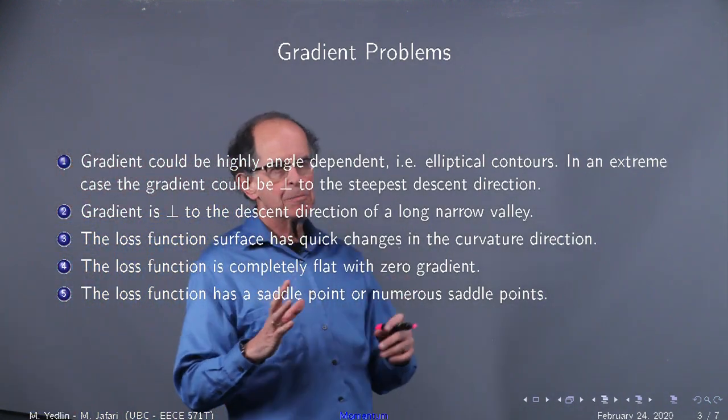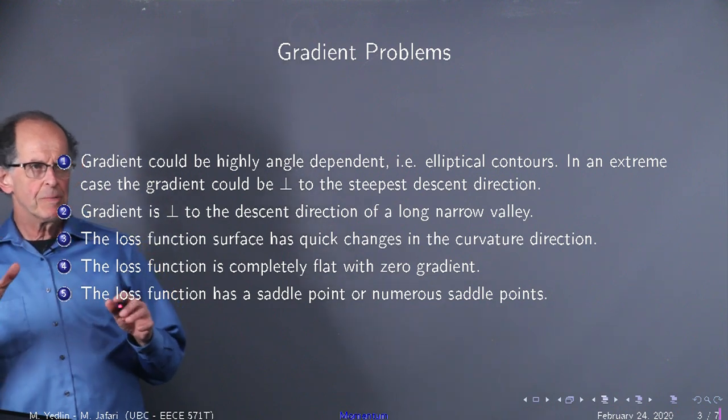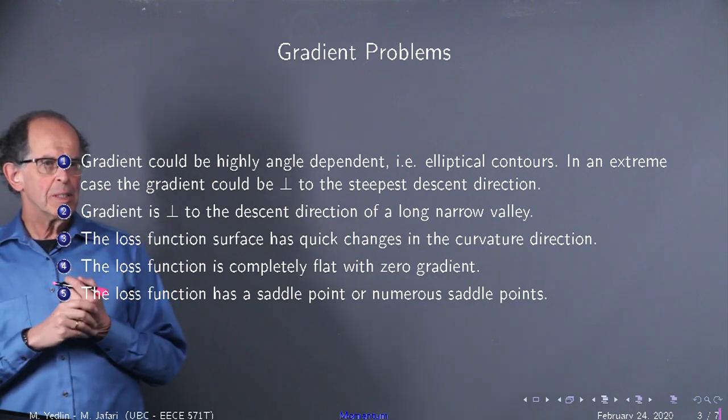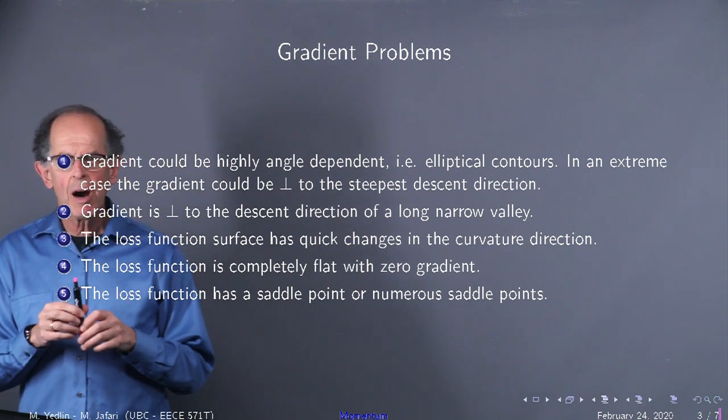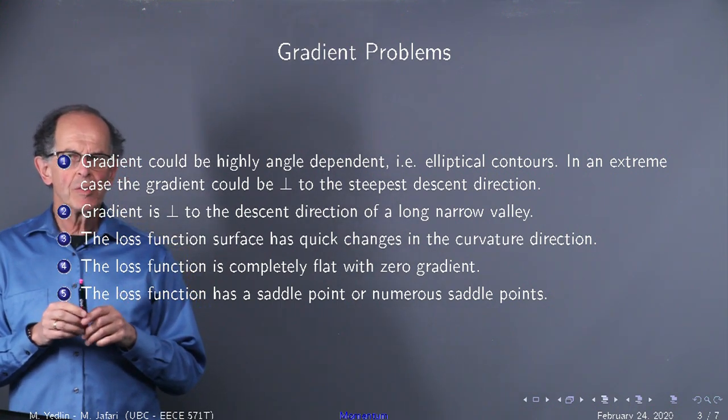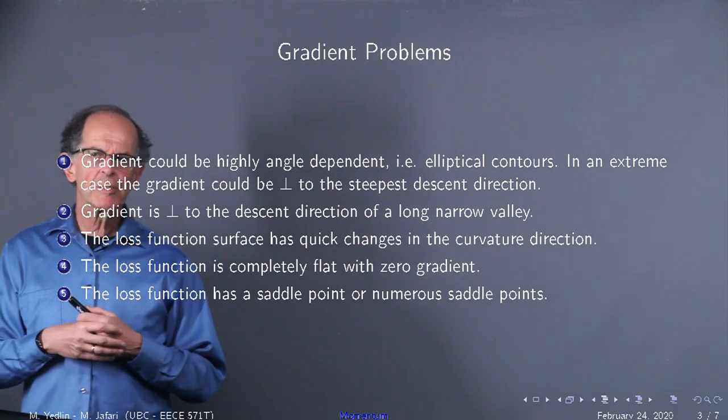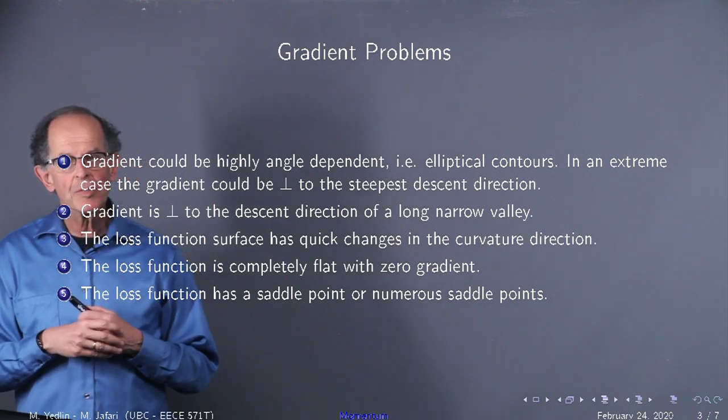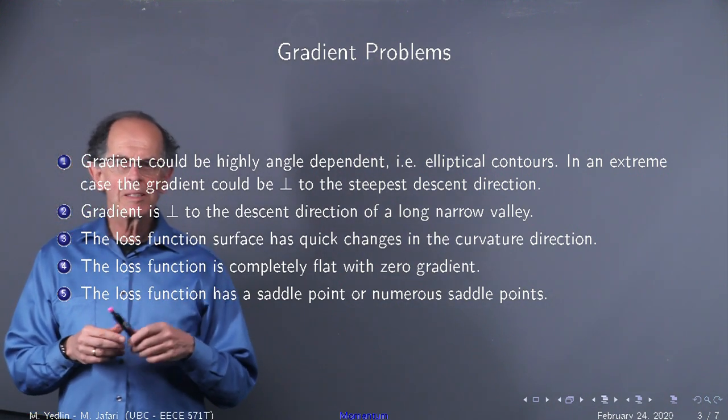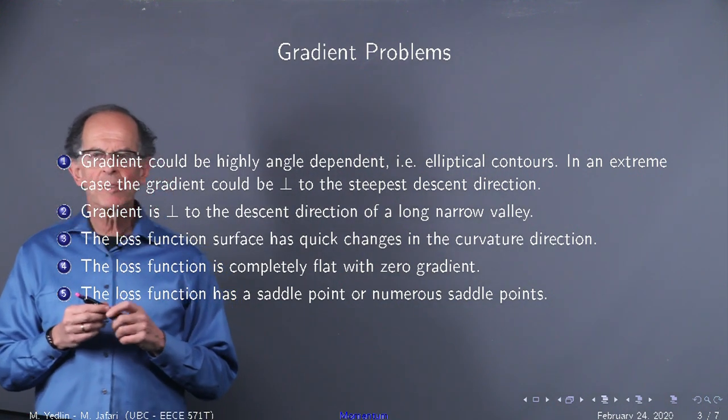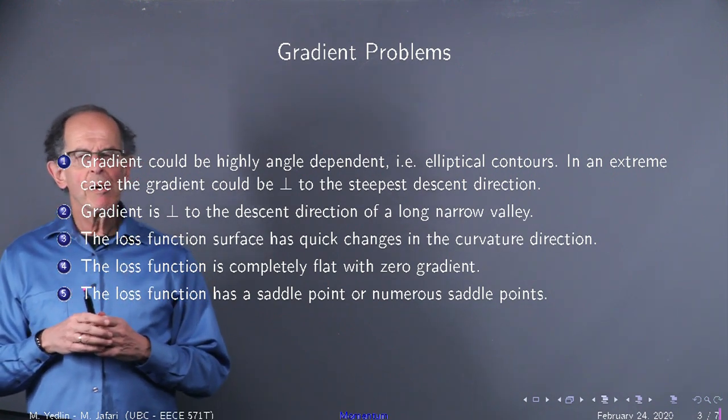What are the gradient problems? And remember that the gradient acts on a surface. So, we could have elliptical contours. And the problem with elliptical contours is that the normal to the ellipse is not the same as the position vector to the ellipse. So, in some cases, for very squashed ellipses, the gradient can be perpendicular to the direction of steepest descent from where we are to the minimum.